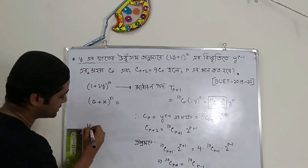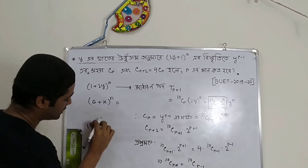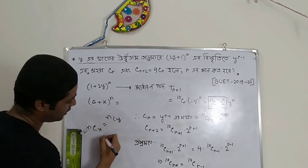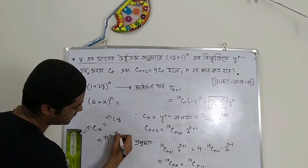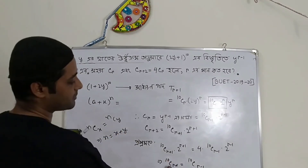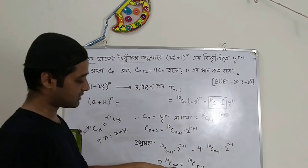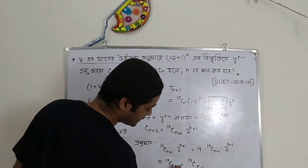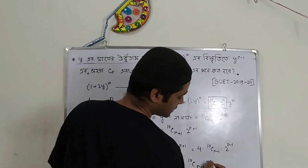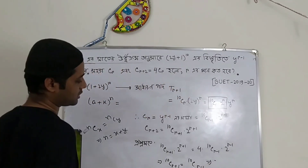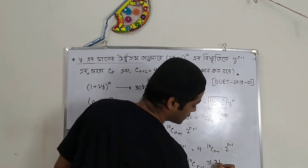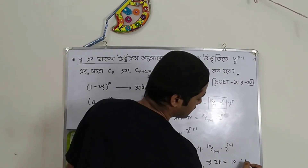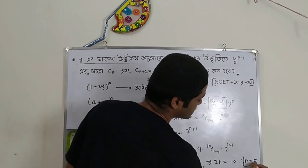We are 2 to the power r minus 1. nCx equals nCy, and n equals 10. So r equals 5. So this is our answer.